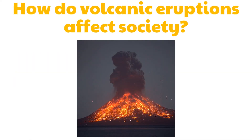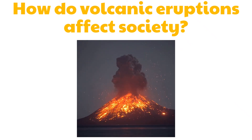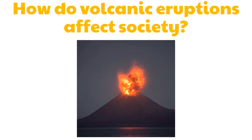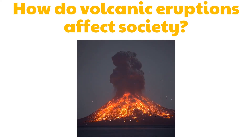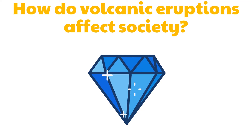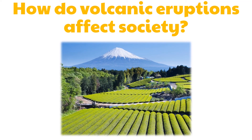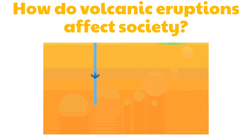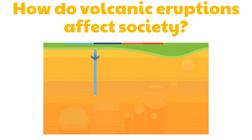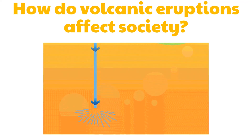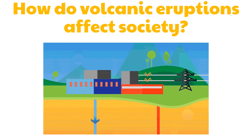So how do volcanic eruptions affect society? A volcanic eruption is often associated with both positive and negative effects. The earth undergoes a process of constant renewal by way of volcanic eruptions. Volcanic eruptions help bring various minerals and chemicals to the surface, increasing the fertility of the soil — which is why volcanic soil is of much value. Volcanoes can also provide a ready source of power, since geothermal energy can be tapped to power cities located nearby.